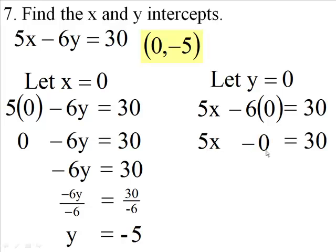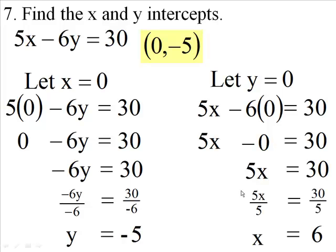Then I have 5x and 6 times 0 is 0, so 5x is 30. Divide both sides of the equation by 5, x is 6. So my point now is 6 comma 0. That becomes my x-intercept.